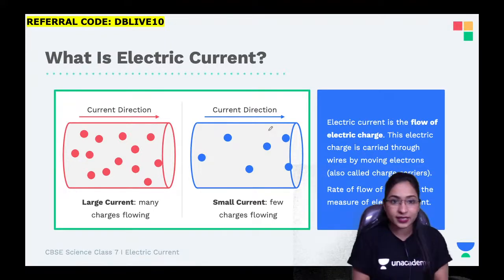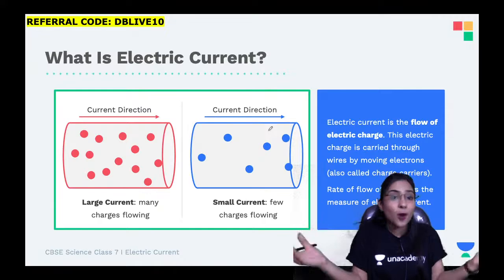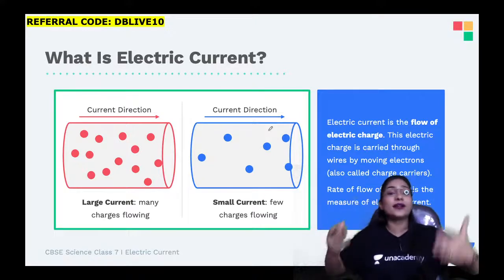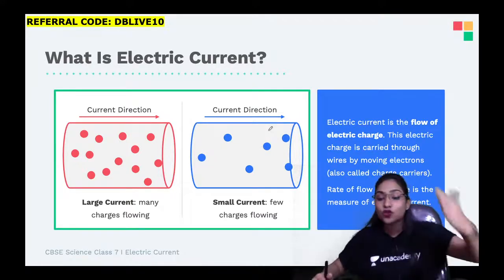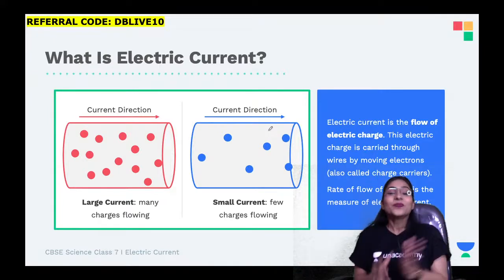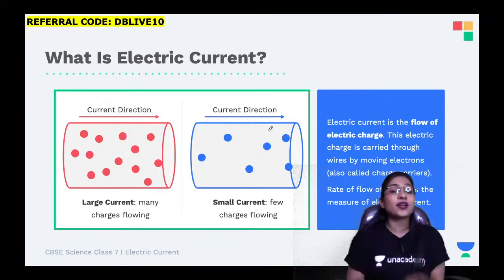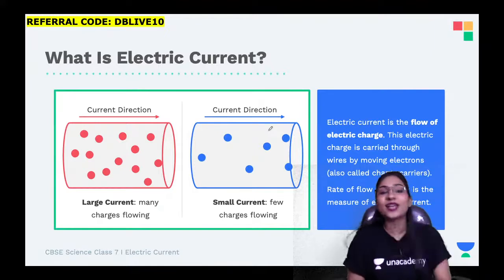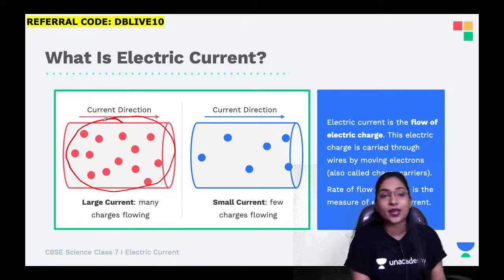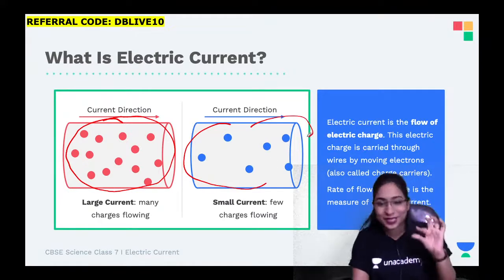Even at your home, your chargers, your earphones - everything has wires. The electricity also flows through these wires. The rate of flow of charge is known as electric current. How much electric current you are using is measured by the rate of flow of charge, and likewise you are charged in the electric bill. If too much electric current is flowing, you get a high electricity bill; if less is used, you get a small bill.